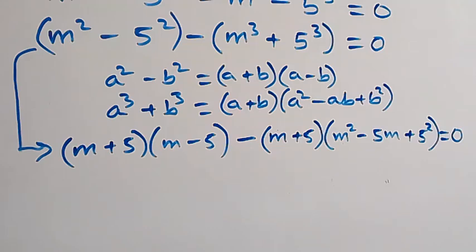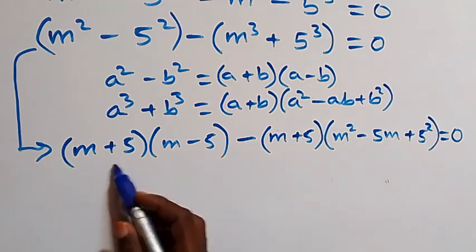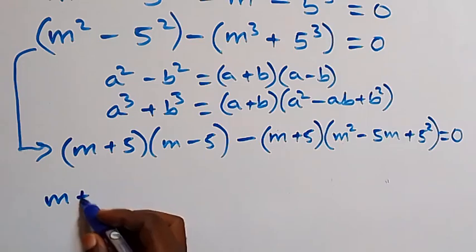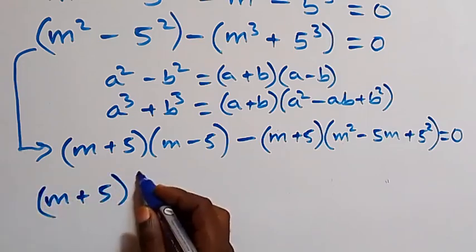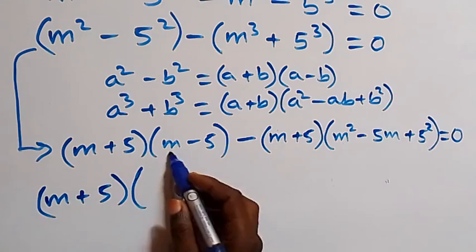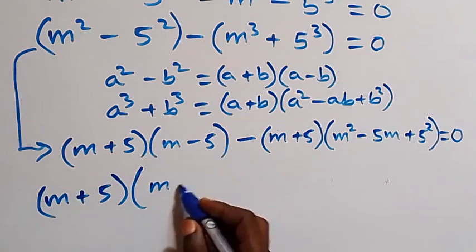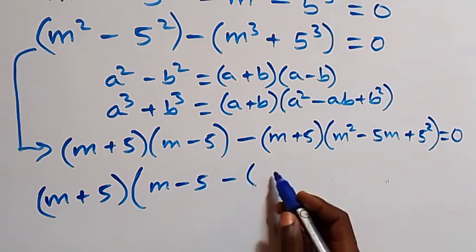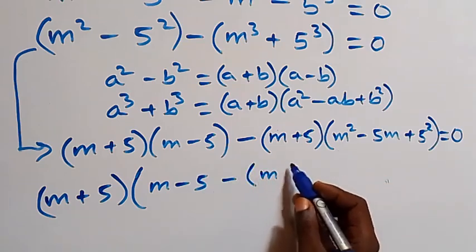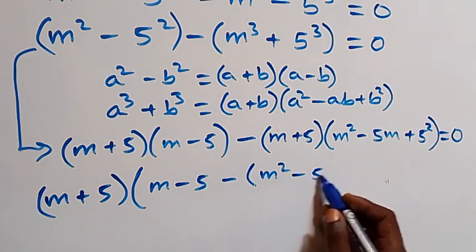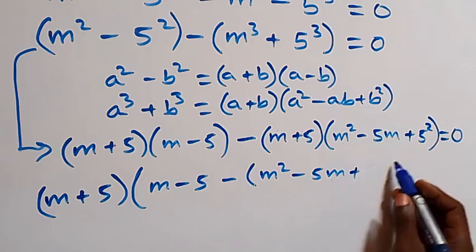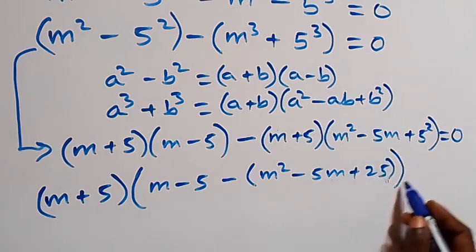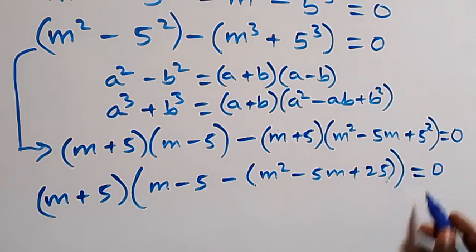From here, m plus 5 is common, so we factor that out and we have m plus 5 in bracket, with what is left: m minus 5, minus in bracket m squared minus 5m plus 25, close bracket, equals zero.